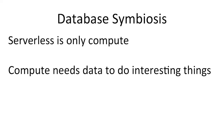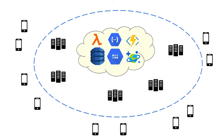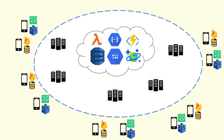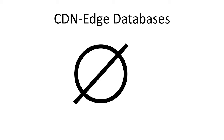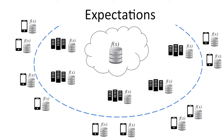Another thing you always have to talk about with serverless is the symbiosis it has with databases. Serverless is just compute — if you don't have databases, you can't do anything interesting. In the cloud, here's an abbreviated list of your choices: Lambda talking to DynamoDB, Google Cloud Functions talking to Datastore, Azure Functions talking to Cosmos DB. On the outside of the bullseye, embedded serverless stacks call into embedded databases — Greengrass calling into IoT, or Firebase Functions calling into Cloud Firestore. Conceptually, anywhere there's serverless, you want a database to call into — that's where you get maximum utility.